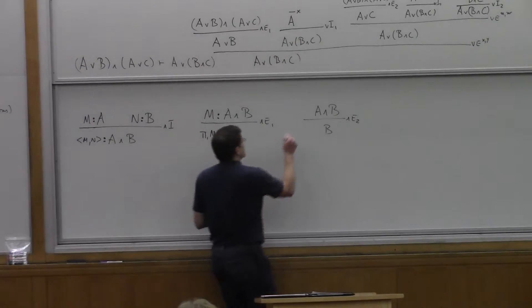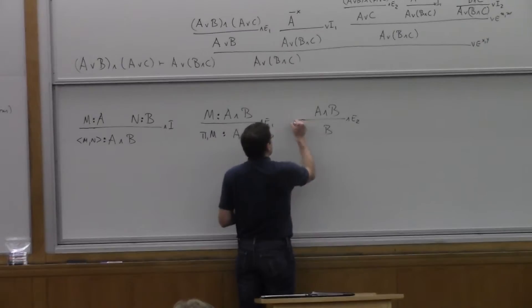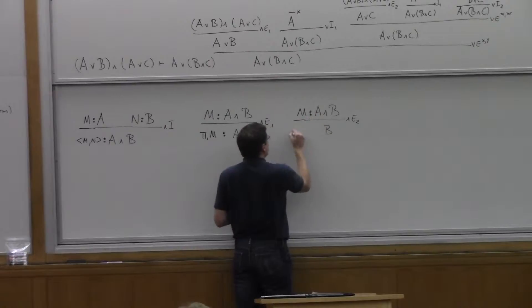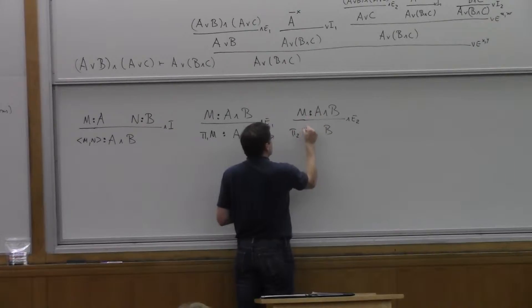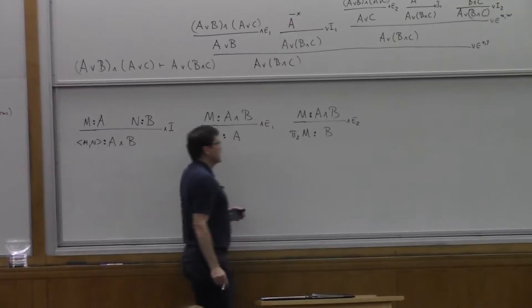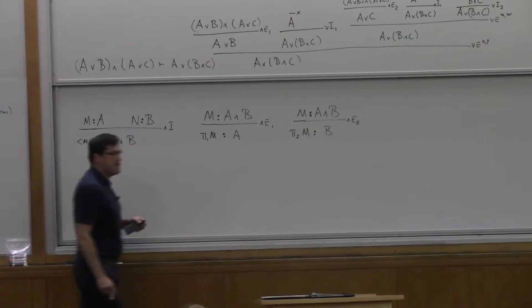Not like that, but this way. If M is a proof of A and B, then the second component of M is going to be a proof of B.